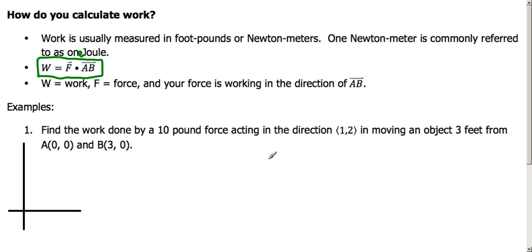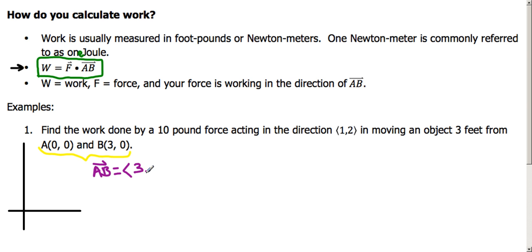Example number one: find the work done by a ten-pound force acting in the direction of vector (1, 2), and moving an object three feet from A to B. We'll use our formula: work equals the dot product of our force vector and our A-to-B vector. Our A-to-B vector is basically given — we're moving the object from (0, 0) to (3, 0), so that vector in component form is (3, 0). We're just moving it east, three units.